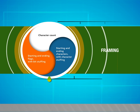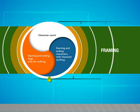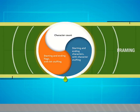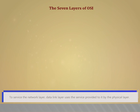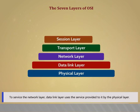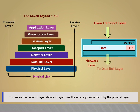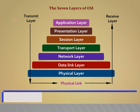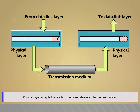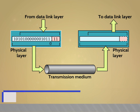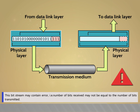Framing. In this video, we are going to see about framing. To service the network layer, the data link layer uses the service provided to it by the physical layer. The physical layer accepts a raw bit stream and delivers it to the destination. This bit stream may contain errors; that is, the number of bits received may not be equal to the number of bits transmitted.